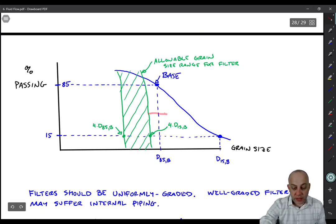If the filter is to the right of that line, then it's not really going to be adequately permeable relative to the base to effectively drain it. So basically what we have is two goal posts. We have that point right there and that point right there. And our filter just has to go through those goal posts.